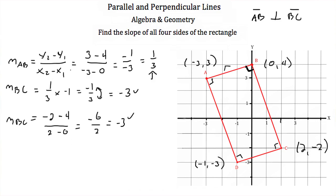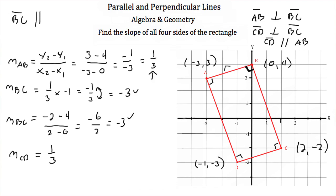Since angle C, D is a right angle, line CD is perpendicular to line BC. And because it's a rectangle, line CD is also parallel to line AB. So the slope of CD equals 1/3. Finally, since it's a rectangle, line BC is parallel to line AD, so the slope of AD equals negative 3. That completes the tutorial on parallel and perpendicular lines.